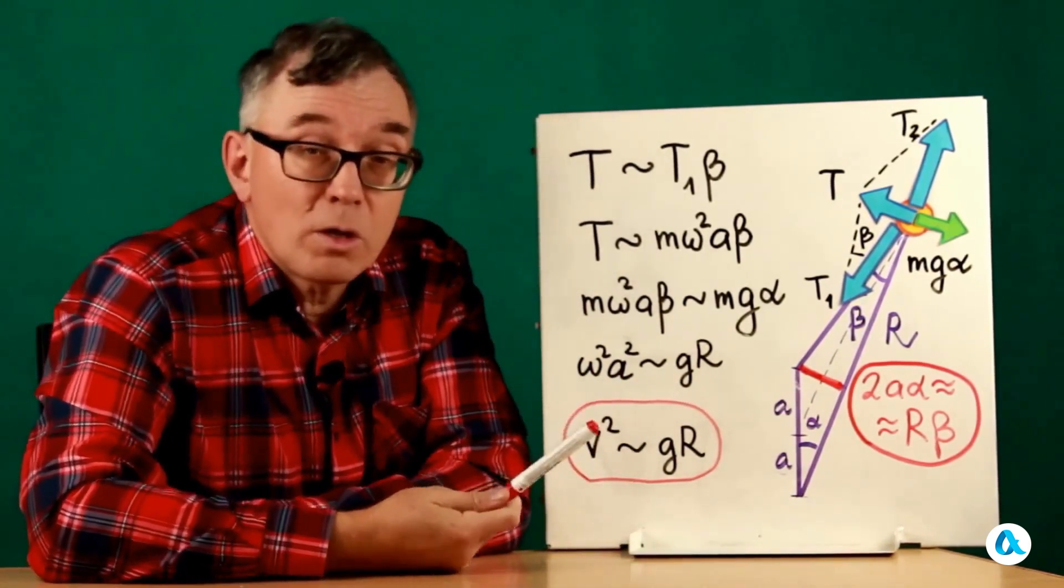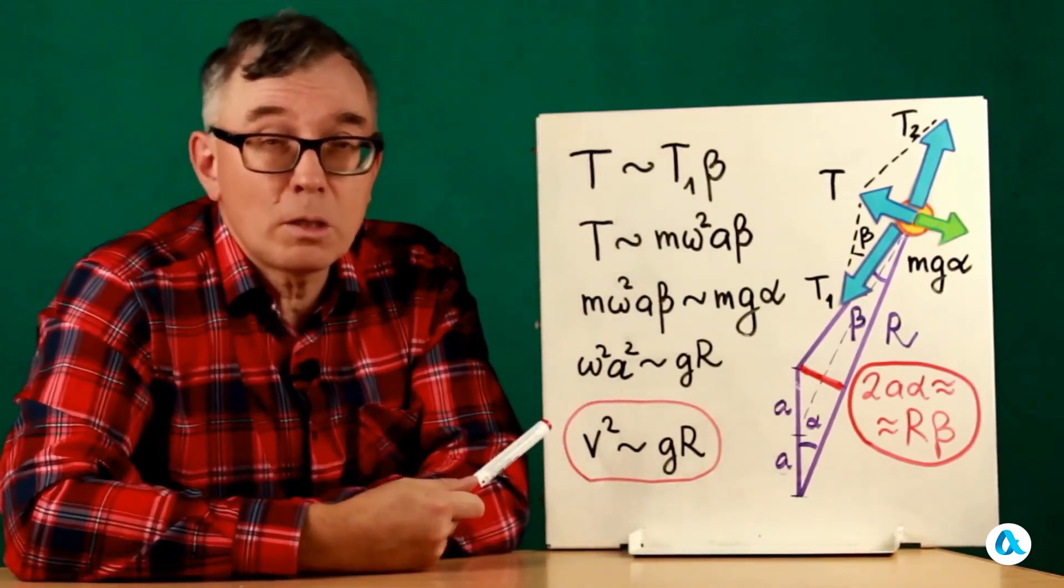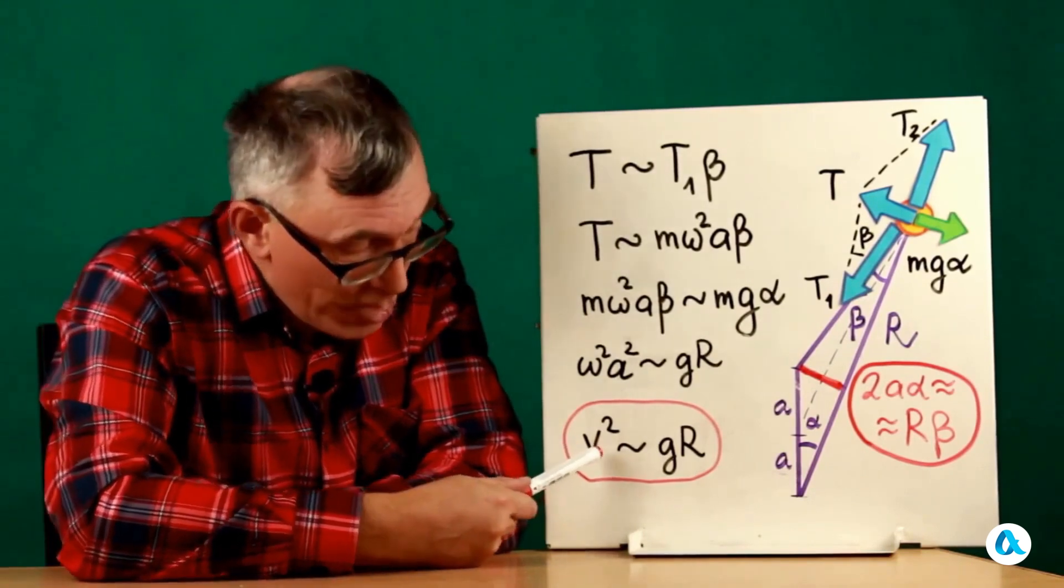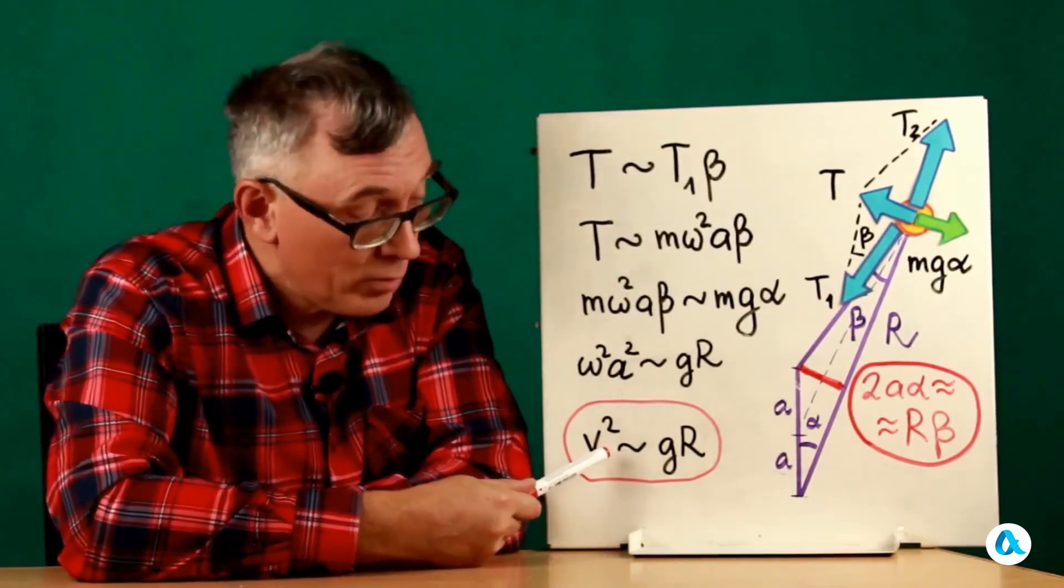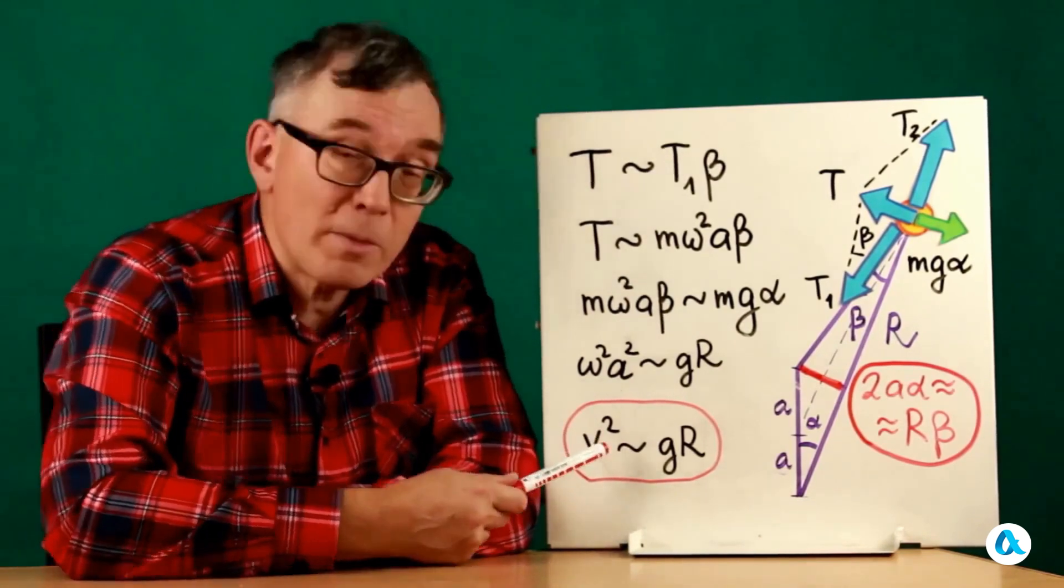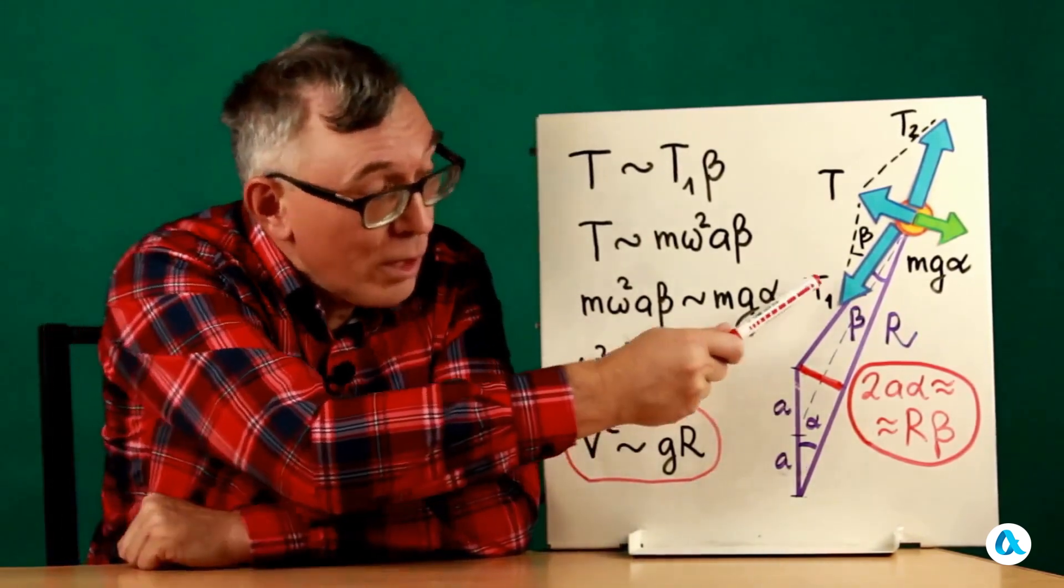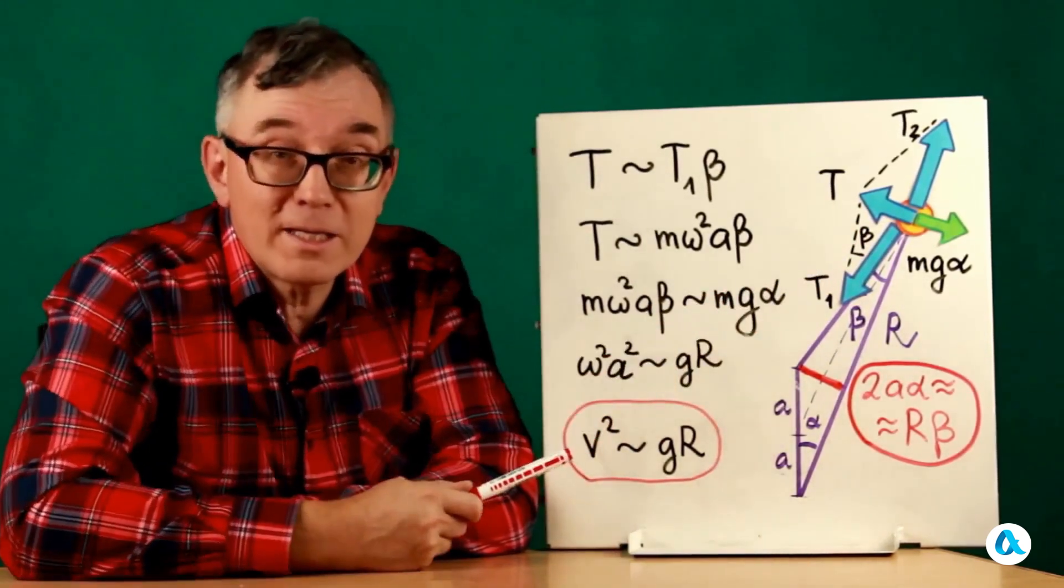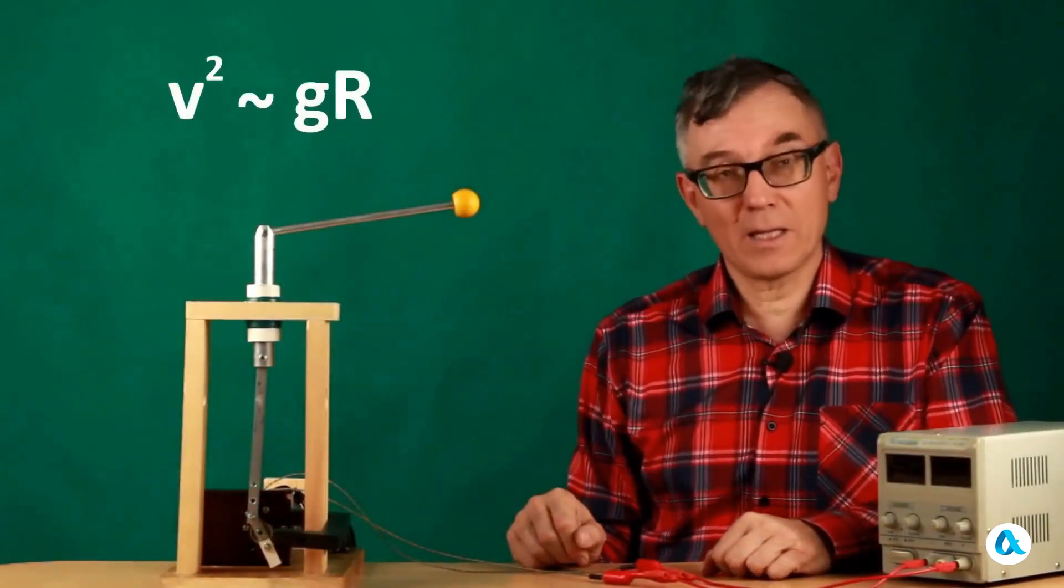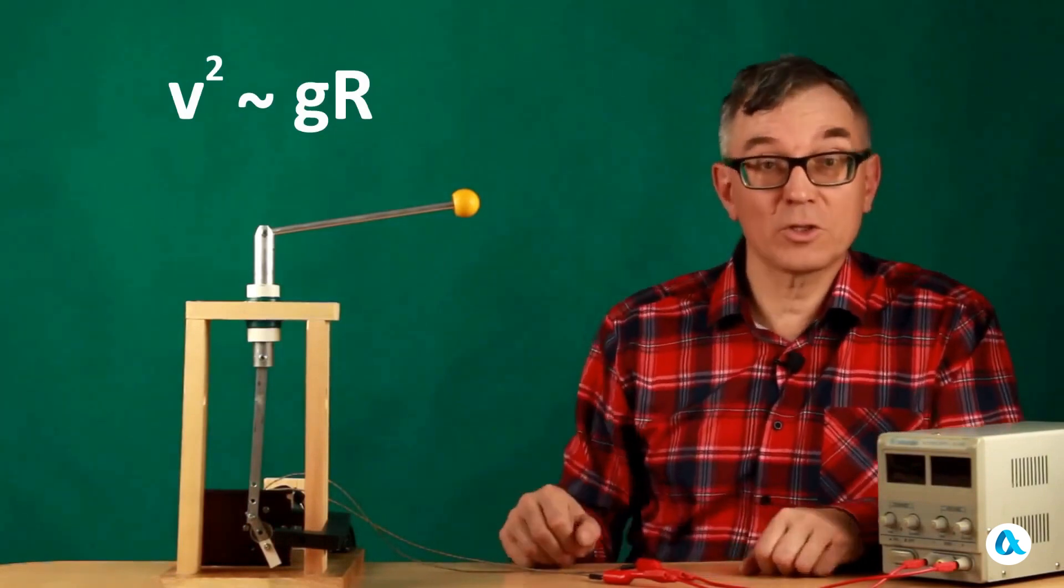We substitute this relationship into the equation. The masses and angles cancel out, and we get this formula: ω²a² should be on the order of gR. And ωa is nothing other than the amplitude velocity of oscillatory motion. So we obtain the condition of equilibrium v² on the order of gR. And I must emphasize once again that what we obtained is, of course, a rough estimate.